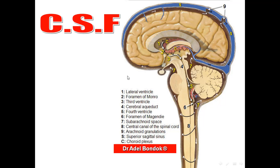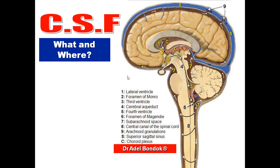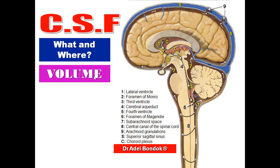Cerebrospinal fluid is a fluid that fills the ventricular system and the subarachnoid space. Most of the CSF is present in the subarachnoid space, not the ventricles. The total volume is 130 milliliters: 30 milliliters in the ventricular system and 100 milliliters in the subarachnoid space.